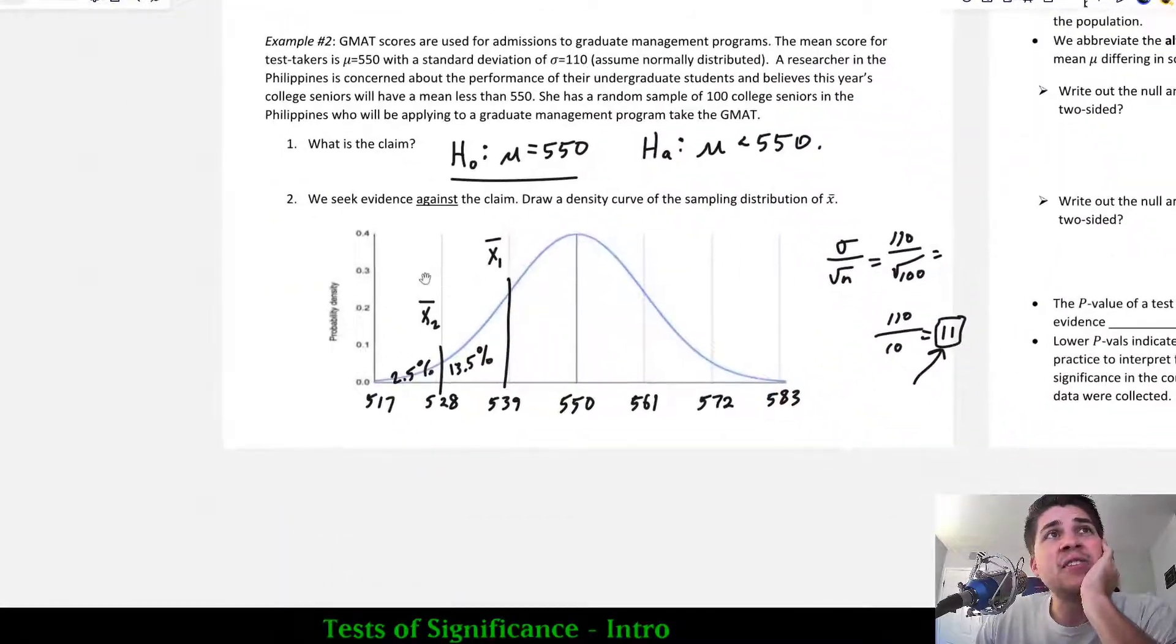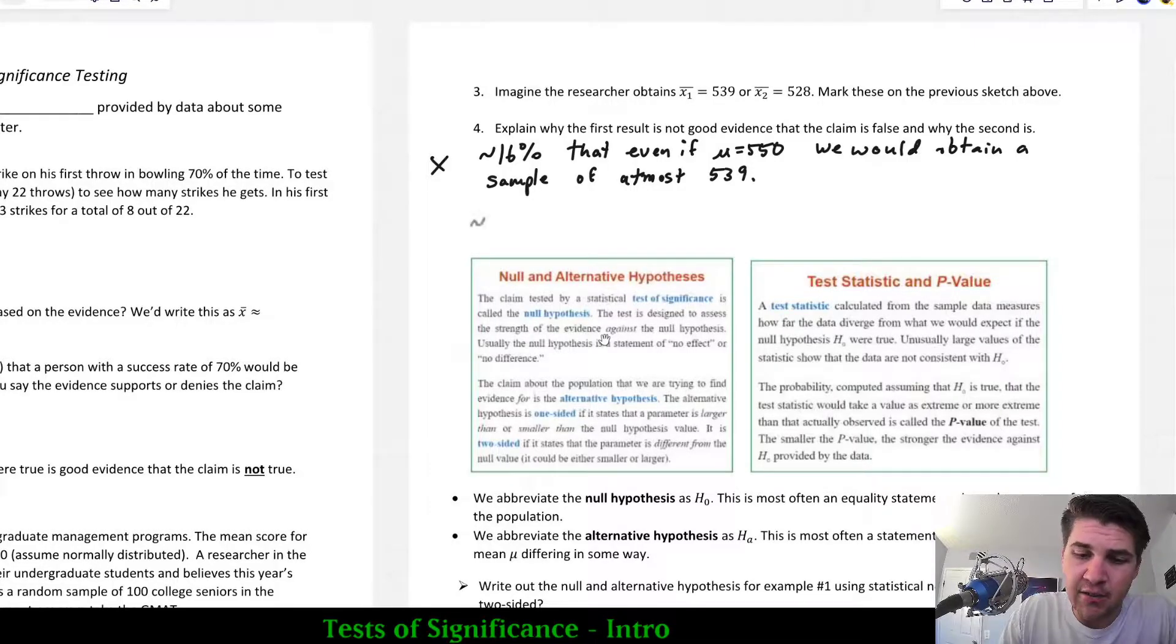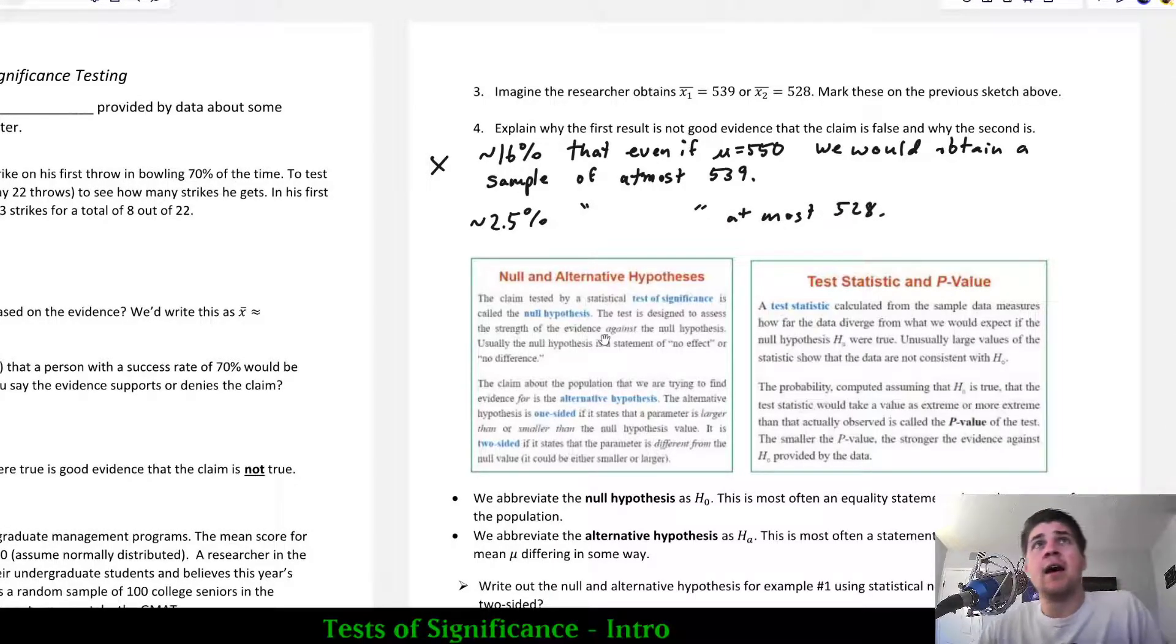Now in the second case, notice that if she obtained a sample mean of 528 from her 100 students, that's a different story because that's a lot further away from the stated mean of the population. And there's only about a 2.5% chance of obtaining a sample of at most 528. Roughly 2.5% of the time she would actually get this low of a sample. That is strong evidence, however. And note the difference that very rarely would you obtain that low of a score. And a lower p-value is stronger evidence against the claim.